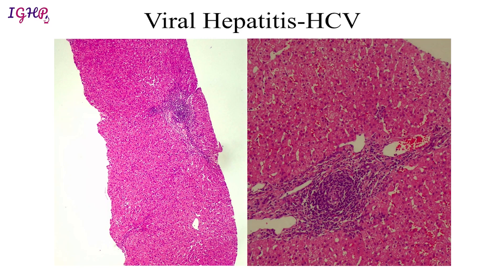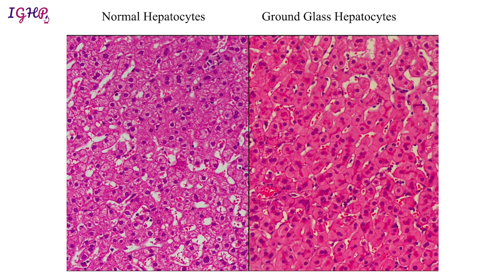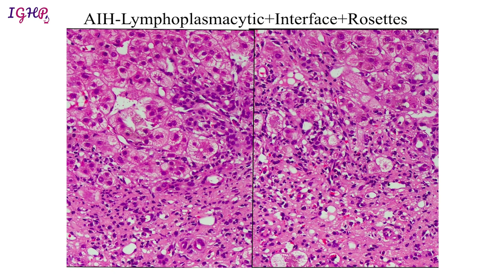In some viral hepatitides like hepatitis C virus, we see the presence of lymphoid aggregates within the portal tract, as seen here. In hepatitis B virus there is presence of ground glass hepatocytes, which are different from normal hepatocytes. Compared to normal hepatocytes which have a rarefied cytoplasm, ground glass hepatocytes have an eosinophilic glassy cytoplasm due to accumulation of hepatitis B surface antigen, which can also be confirmed on orcein stain or Victoria blue stain.